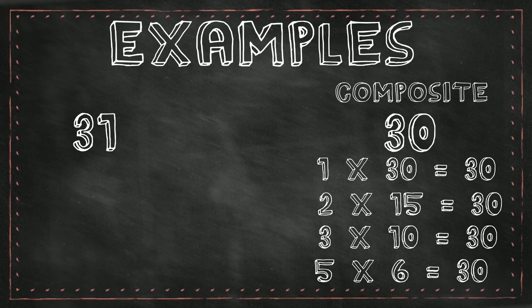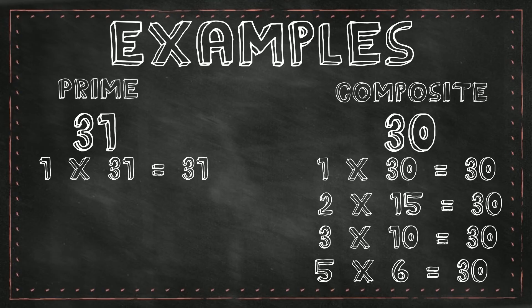31 is divisible by 1. It's not divisible by 2 because it's odd, or 3, or any other number. So it's a prime number.